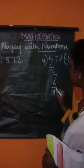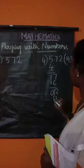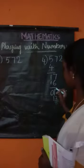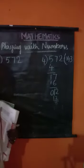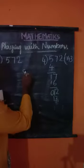Again, 2. 4 threes are 12. If I cancel 2, 1 minus 1 is 0. Students, 572 is divisible by 4. Let us divide by 8.